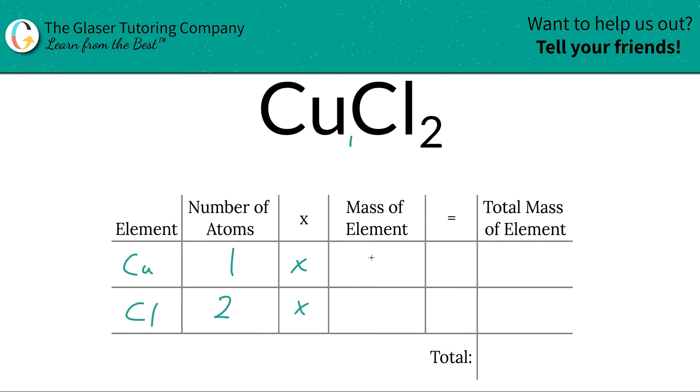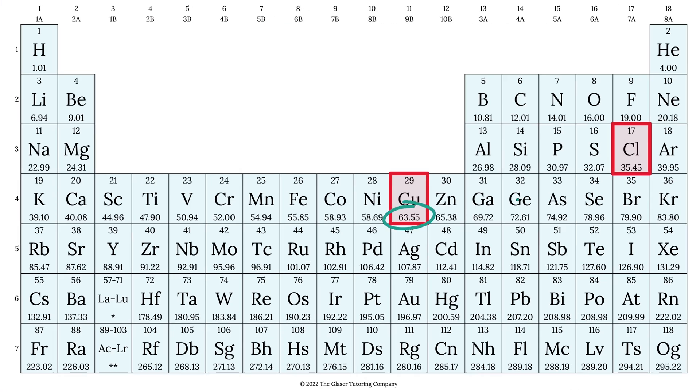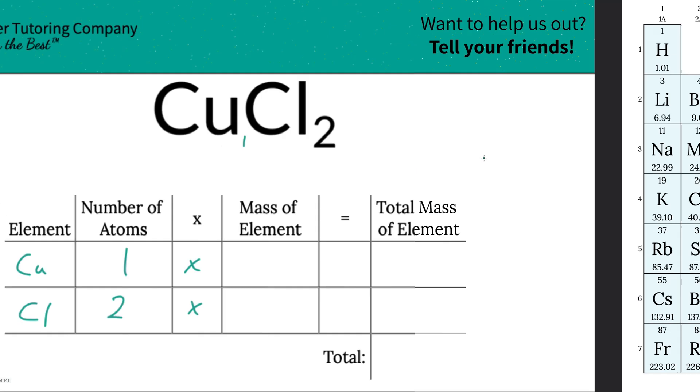So the subscripts are what are going to tell you the number of atoms. Next is the mass of the element. We go to the periodic table to find this. So copper here is going to be roughly 63.55. Chlorine is 35.45. And those units can represent gram per mole or AMU, depending upon if you're finding molar mass or molecular mass. So let's write that down.